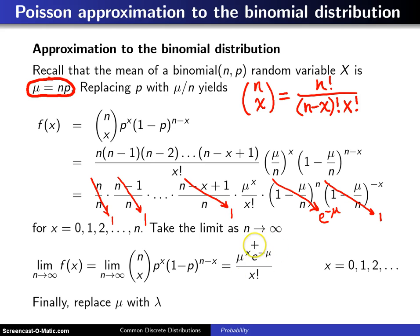This is known as the Poisson distribution, and it is parametrized by a single parameter, mu, which happens to be its mean. But for reasons associated with the Poisson process, a lot of authors, instead of using mu, will use lambda, and that will be the form that we use on the next slide.